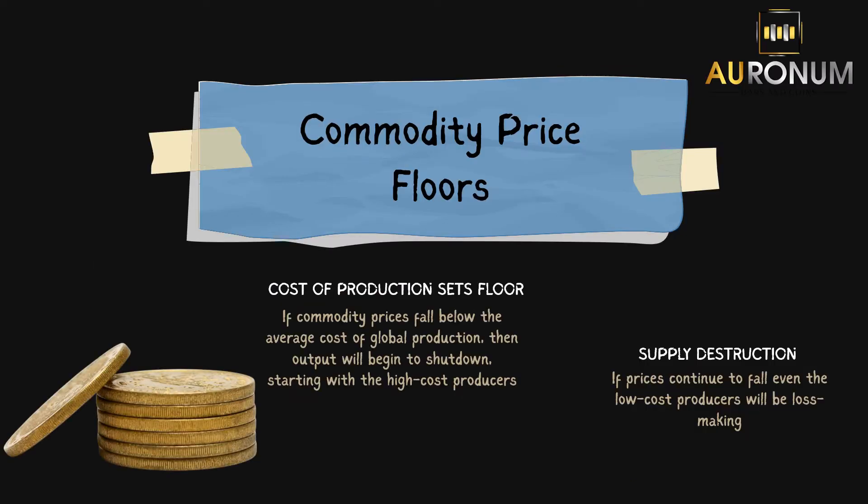When it comes to commodities there is a price floor, and this basically means that if the price falls below a certain level then certain fundamental changes will happen in that market and prevent the price from falling any further. This is all to do with the cost of production, and this is where the price floor is — because if a commodity such as gold falls below the cost of production, then a lot of the mining companies are going to start to shut their mines.